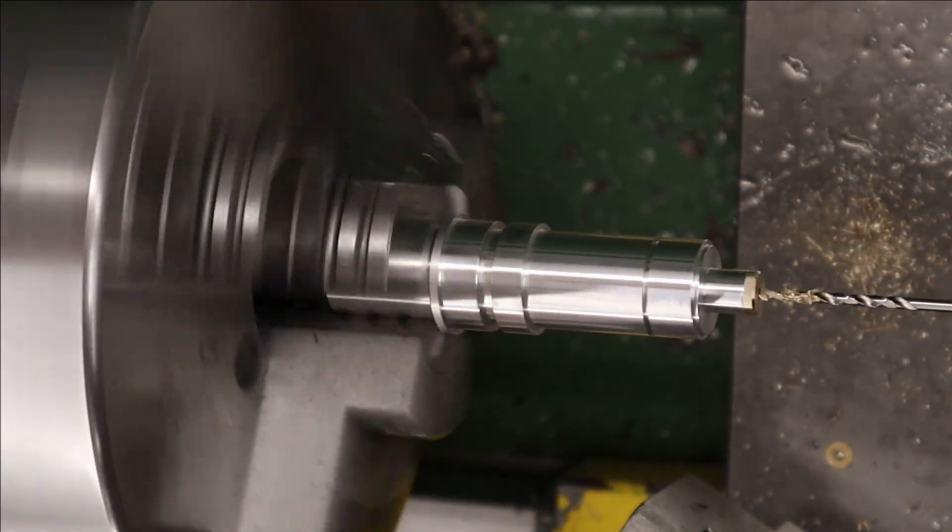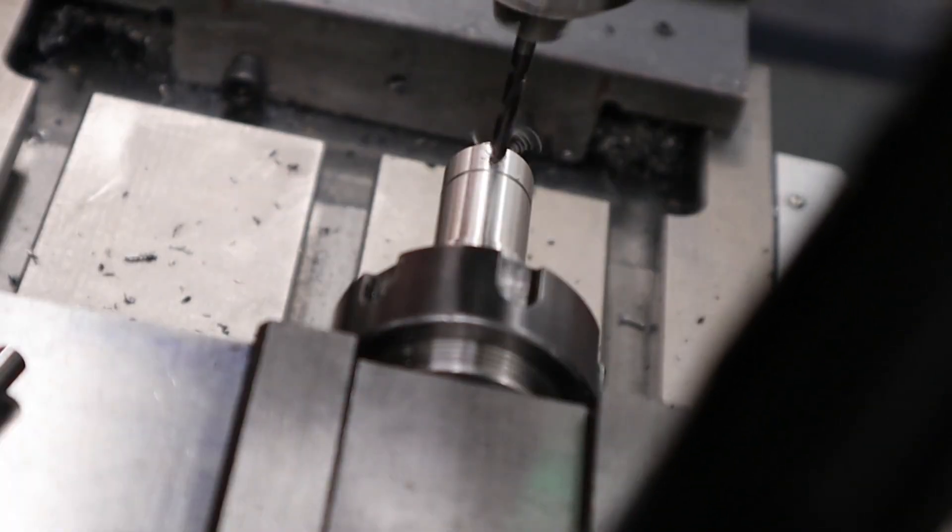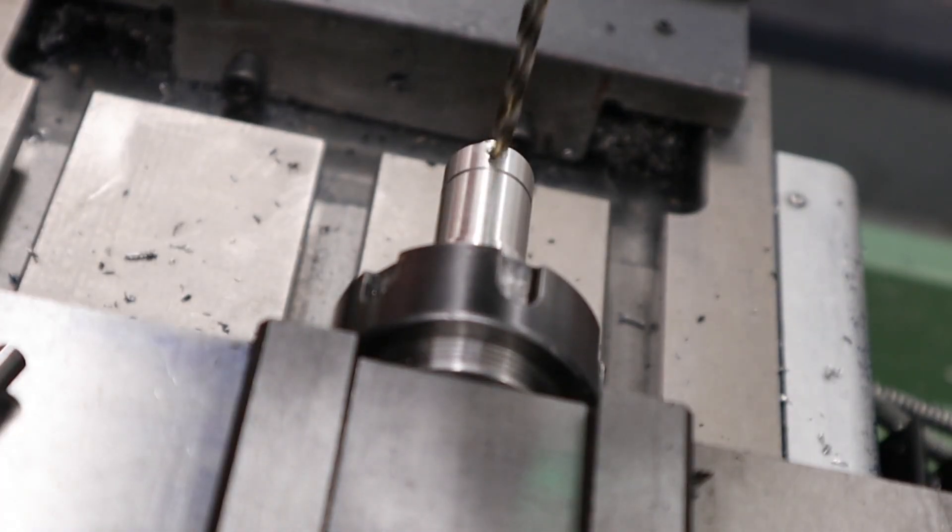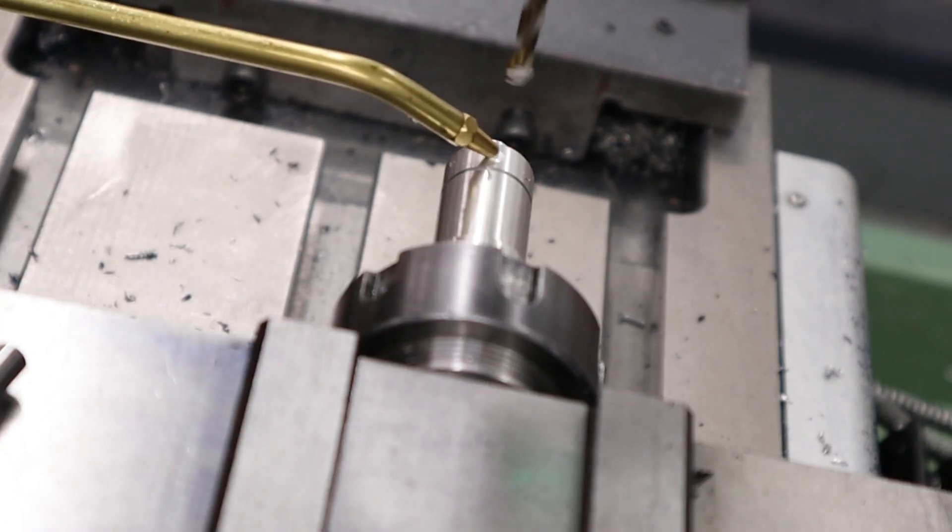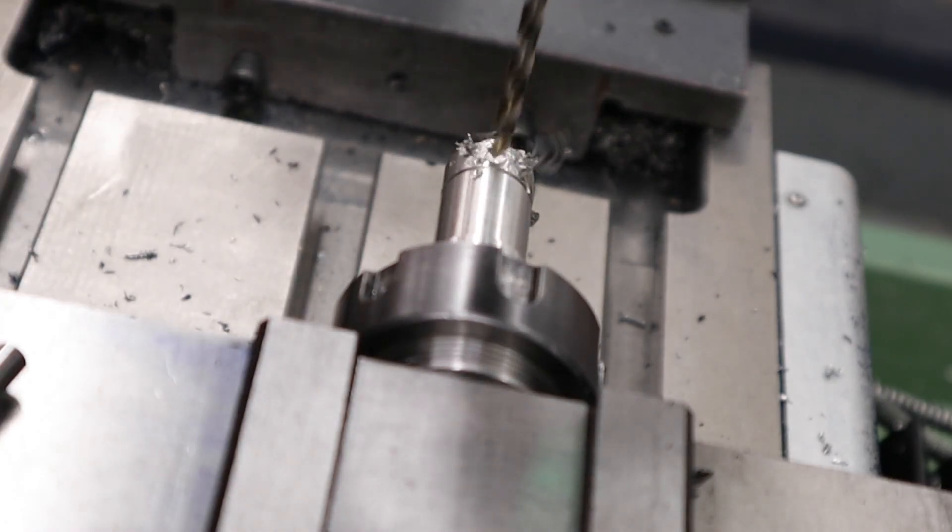With that done we can move the part over to the mill and drill the transfer port hole. First thing we do is spot drill the end using just a four millimeter carbide spot drill. Come back with a 4.5 mil drill bit.